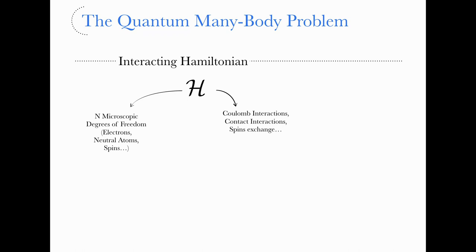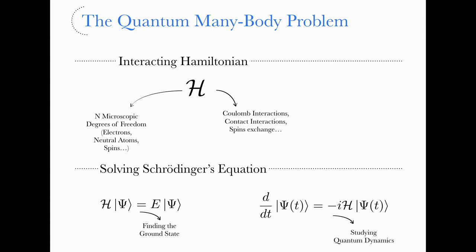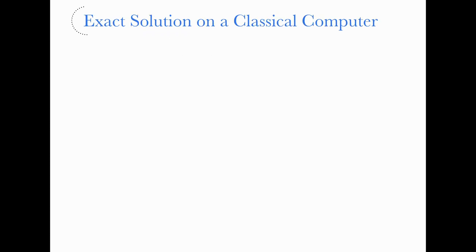You can have a pool of interactions or whatever your favorite interaction is. One of the manifestations of the quantum many-body problem is that it is very hard, both numerically and analytically, to solve for the ground state of this Hamiltonian and also to study the quantum dynamics — for example, if you want to solve the time-dependent Schrödinger equation. Why is it the case? If you turn to a classical computer and you want to find the ground state,